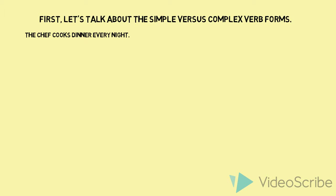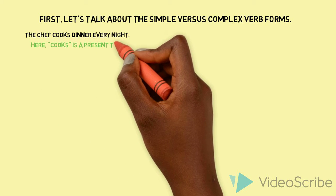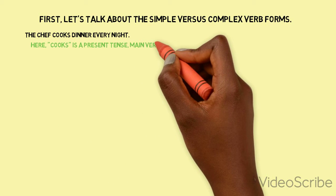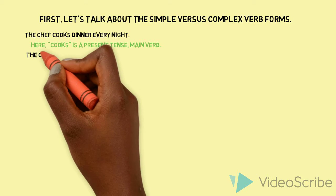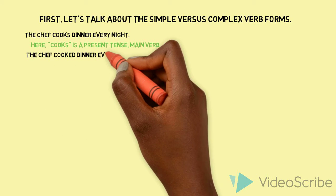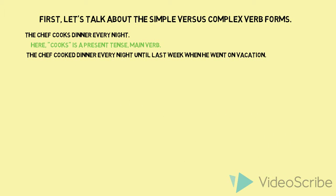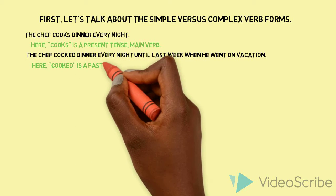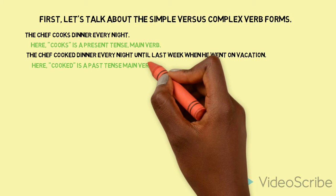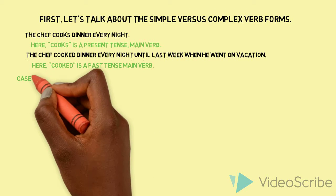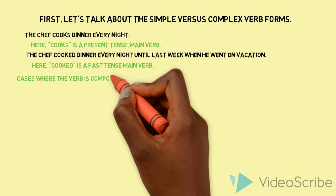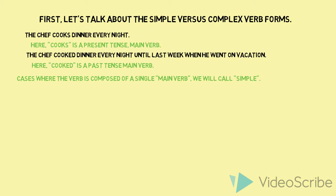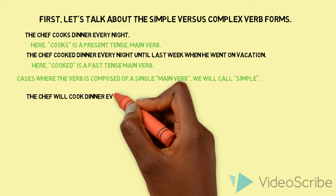The chef cooks dinner every night. Here, cooks is a present tense main verb. The chef cooked dinner every night until last week when he went on vacation. Here, cooked is a past tense main verb. Cases where the verb is composed of only a main verb, we will call simple.